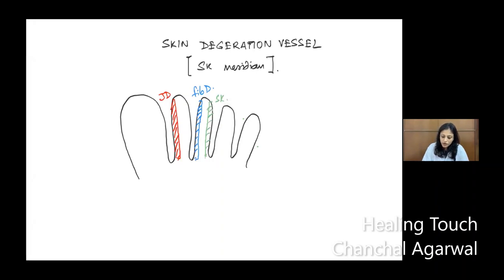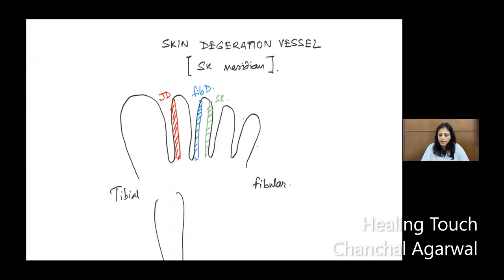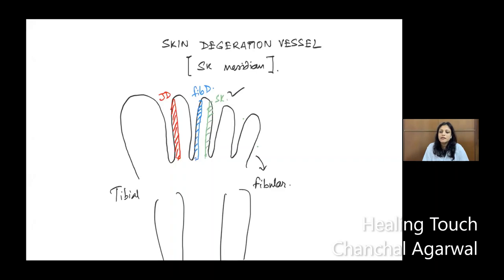This side is called the tibial side and this side is called the fibular side, because of the bones — tibia and fibula — in the lower leg, below the knee. Since the bone here is tibia and here is fibula, we say: on the third toe towards the fibular side, we have the SK Meridian. This is a very beautiful meridian. After understanding it, you will see how many problems you can treat through this simple meridian, which consists of only seven points. Understanding only seven points, we can treat numerous problems related to skin.